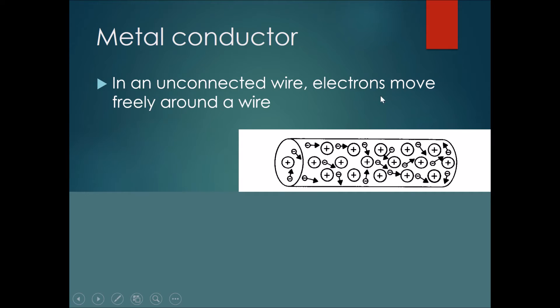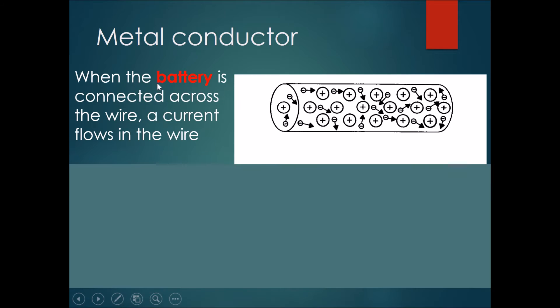In an unconnected wire, electrons move freely around a wire. You can see that in the section of wire that is not connected to any battery or power source, electrons are free to move and they move in random directions. However,